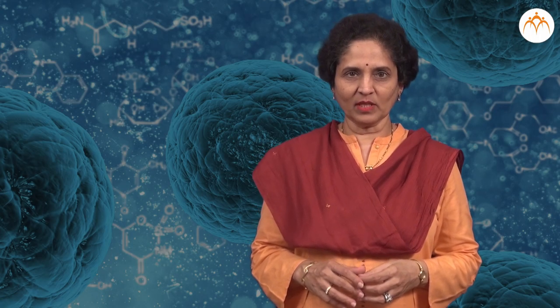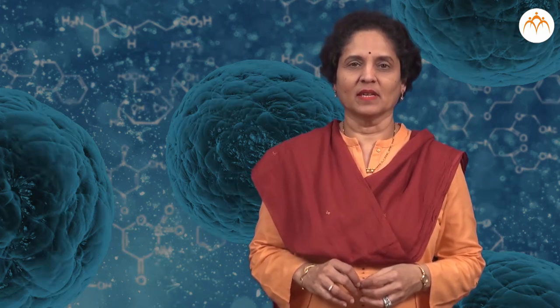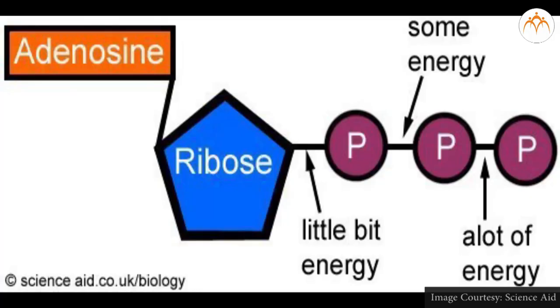Respiration is an exothermic reaction occurring at the cellular level. In this process, carbohydrates are oxidized to release biological energy in the form of ATP — adenosine triphosphate molecules. Carbon dioxide released is a byproduct of this process, which is called aerobic respiration.